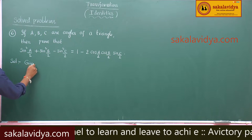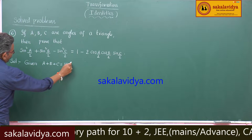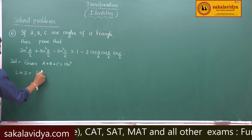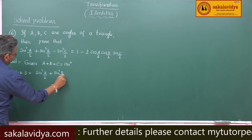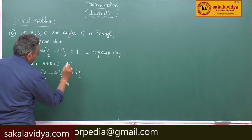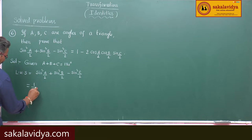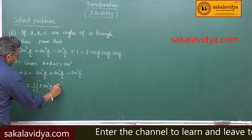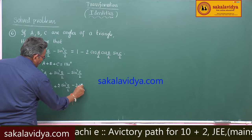Given A plus B plus C is equal to 180 degrees. Take the left hand side: sin²(A/2) plus sin²(B/2) minus sin²(C/2). Multiply and divide by 2. This we can write as half into 2sin²(A/2) plus 2sin²(B/2) minus 2sin²(C/2).